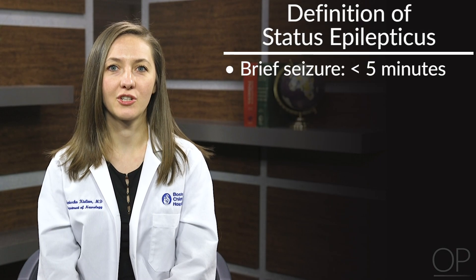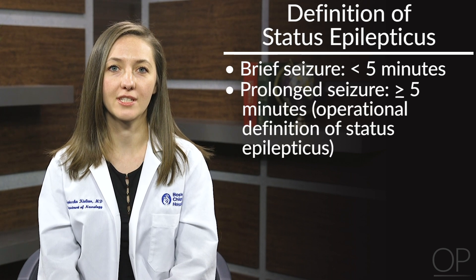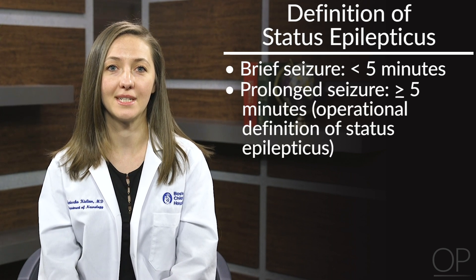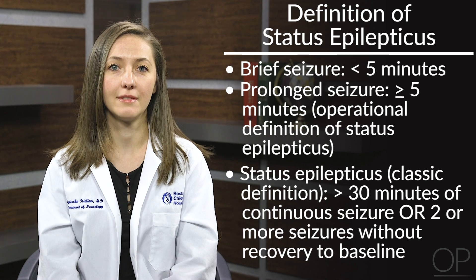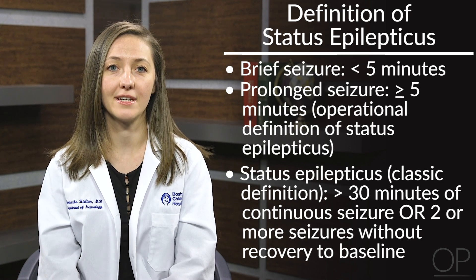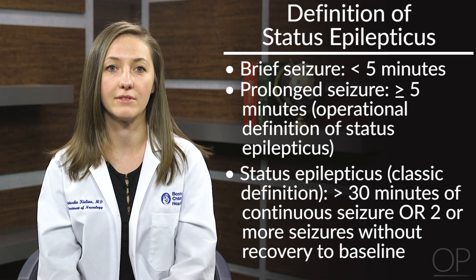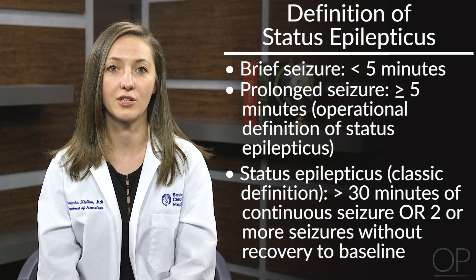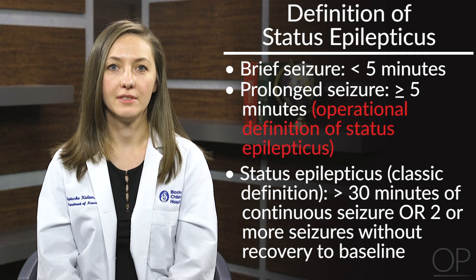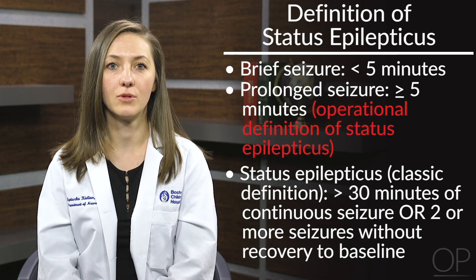Traditionally, brief seizures are defined as lasting less than 5 minutes, while prolonged seizures last between 5 and 30 minutes. Status epilepticus has classically been defined as more than 30 minutes of either continuous seizure activity or 2 or more sequential seizures within 30 minutes without full recovery of consciousness between seizures. However, the operational definition of status epilepticus is a seizure lasting more than 5 minutes, and this is the point at which we typically start administering medications.